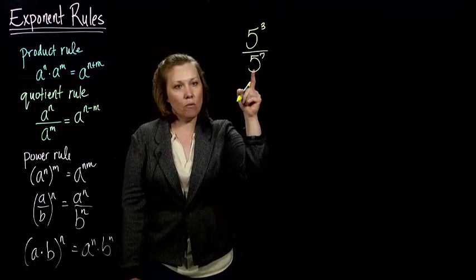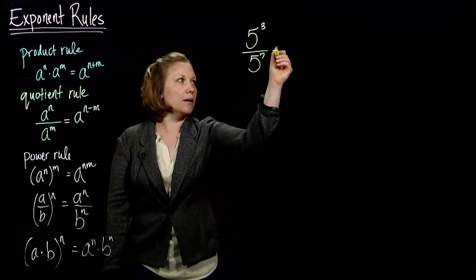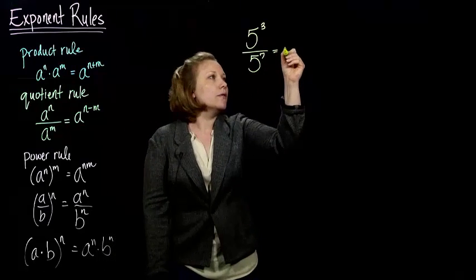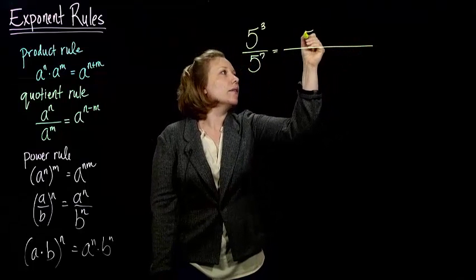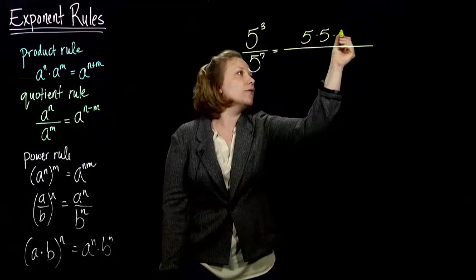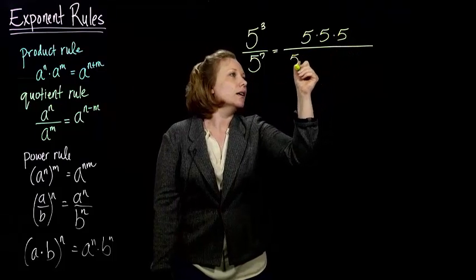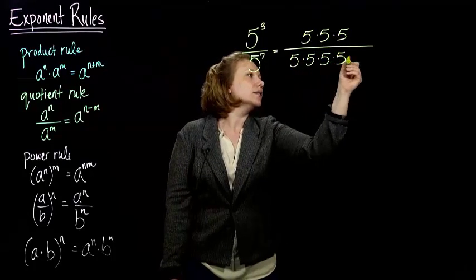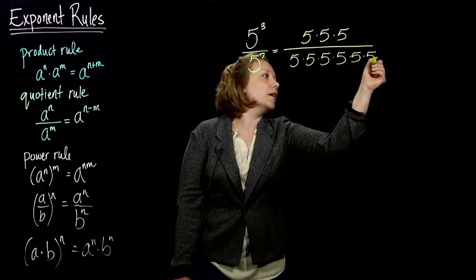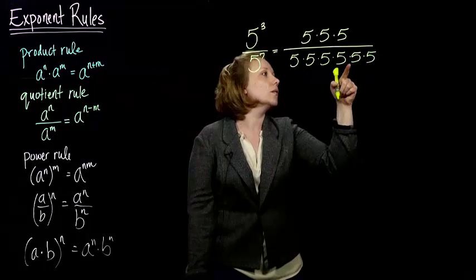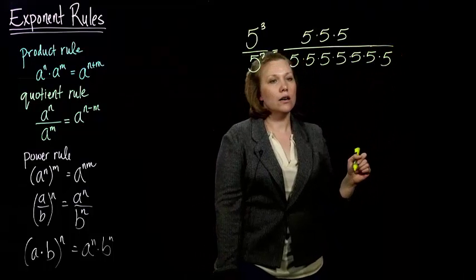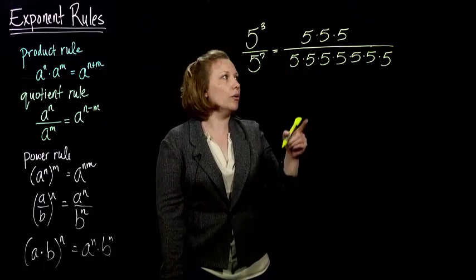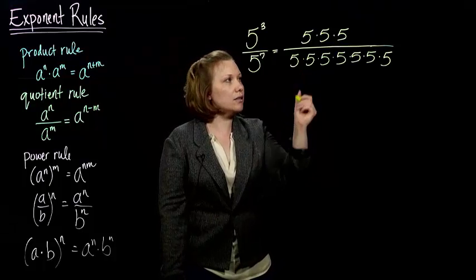So now we've got more 5's on the bottom than we do on the top, but if we write it out, well, I've got 5 times itself 3 times on the top and I've got 5 times itself 7 times on the bottom, excuse me. Alright. So now I can cancel again.